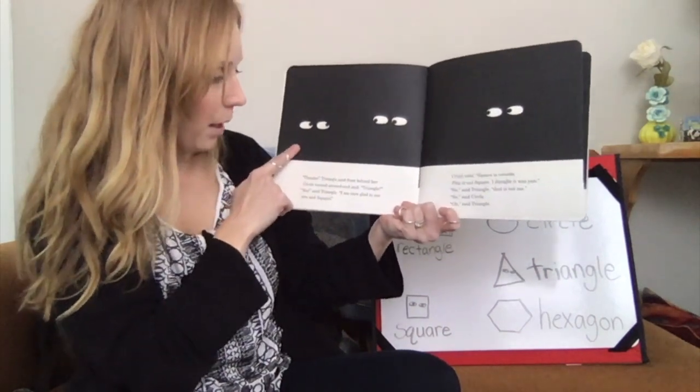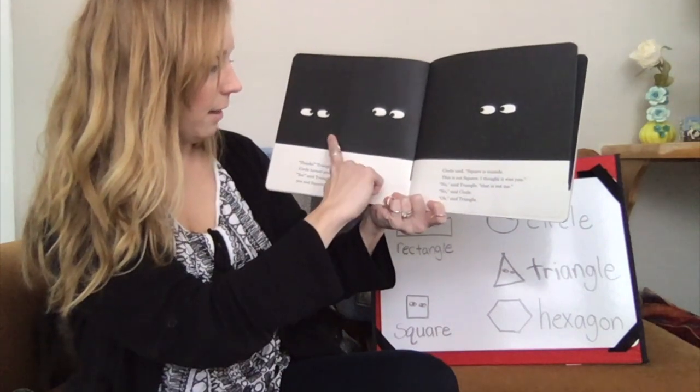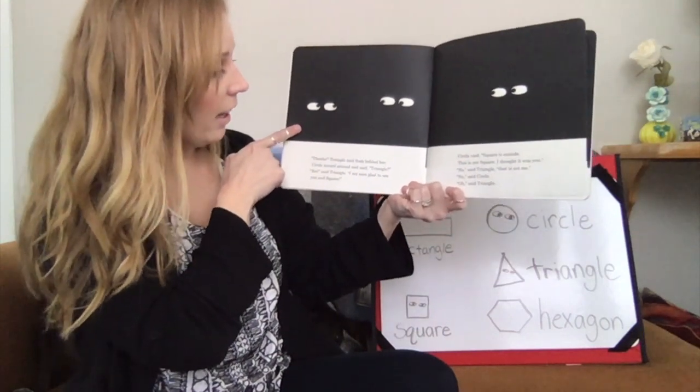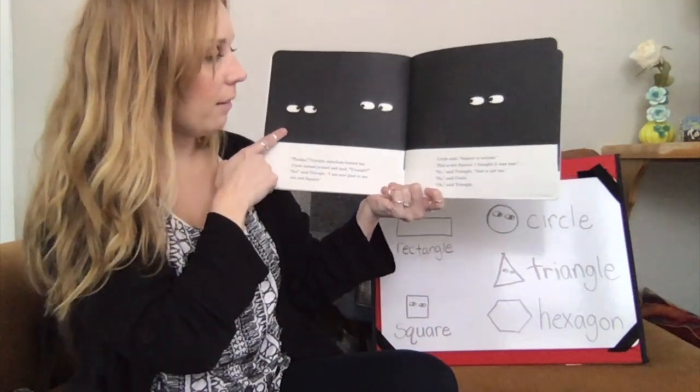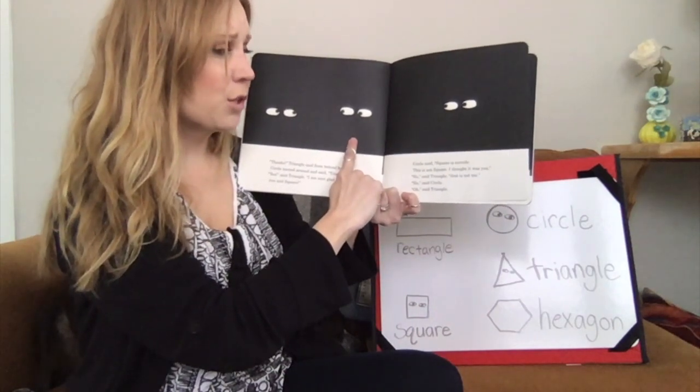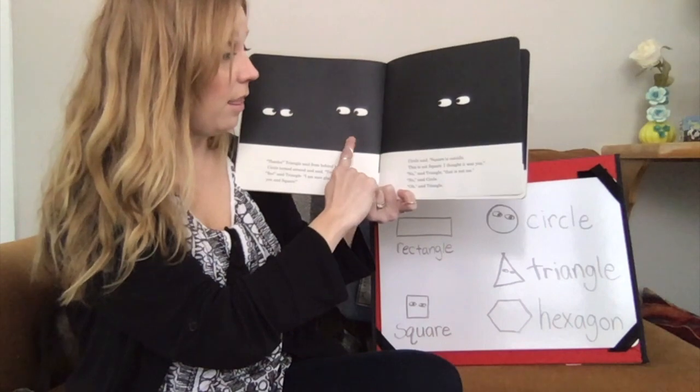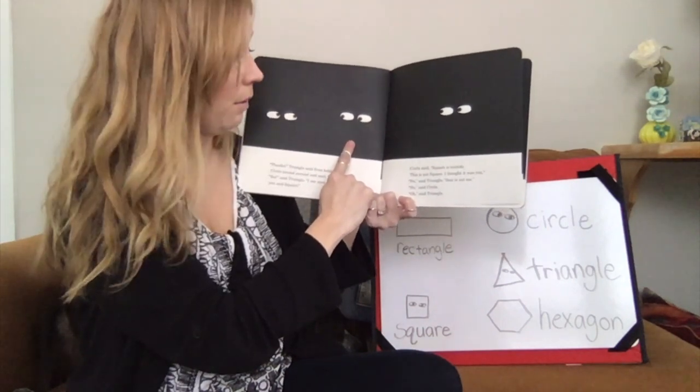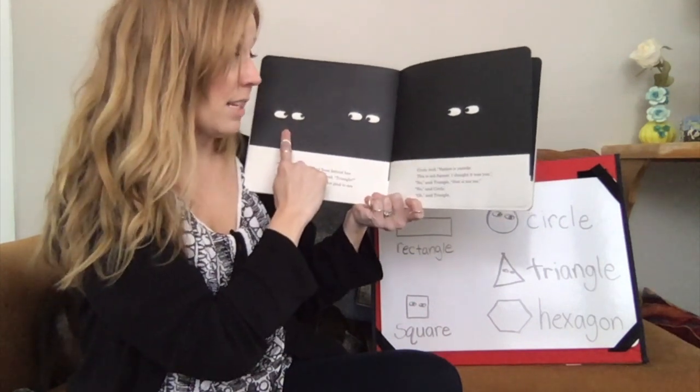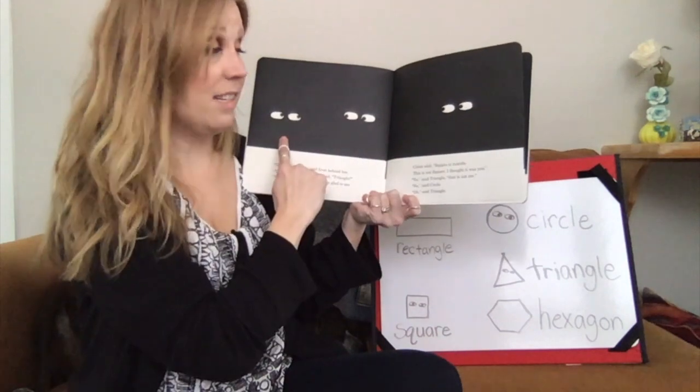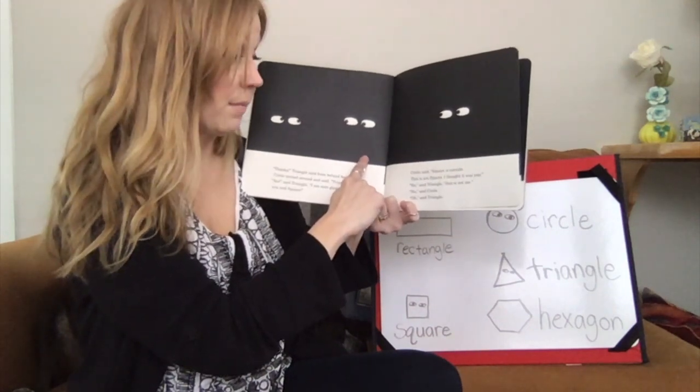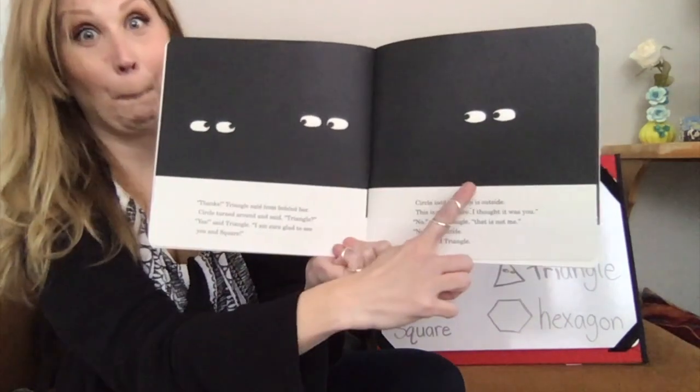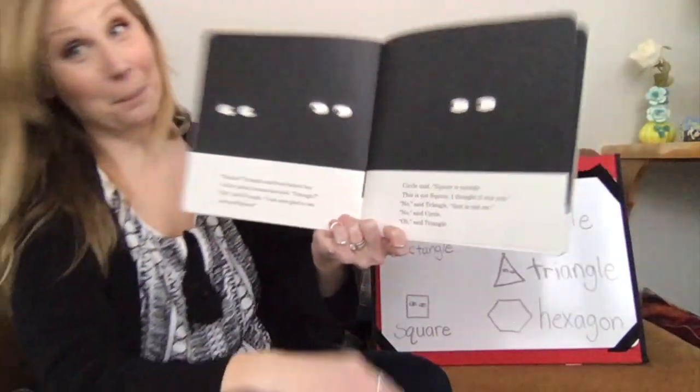Thanks, Triangle said from behind her. Circle turned around and said, Triangle. Yes, said Triangle. I am sure glad to see you and Square. Here, Circle said. Square is outside. This is not Square. I thought it was you. No, said Triangle. That is not me. No, said Circle. Oh, said Triangle. Oh my goodness.